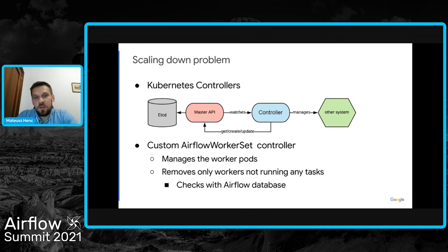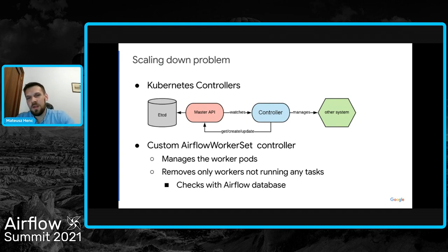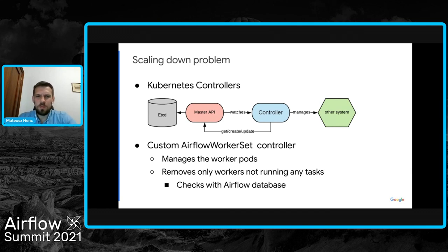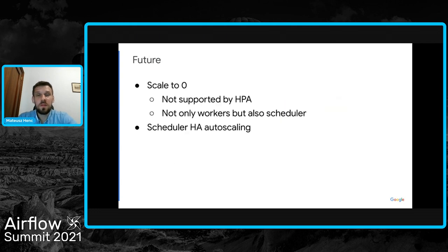It may happen that we cannot remove as many workers as desired and end up with more workers than the desired count — in that case we simply wait for tasks to finish. This means we never remove a worker that is running a task, keeping tasks safe until they are done. There is no transaction, so it is theoretically possible that a worker started a task between when we checked the database and when we killed it, but this situation was never encountered during testing or did not cause meaningful problems given the very short time window involved.